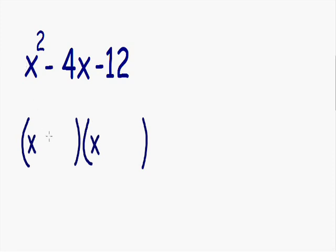So now we've got to figure out what goes on the right side of each parentheses. And the way we figure this out is we need to find two numbers that multiply and give us negative 12. And these two numbers also have to add or subtract and give us negative 4.